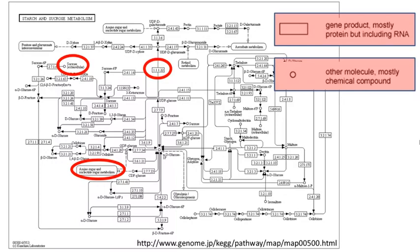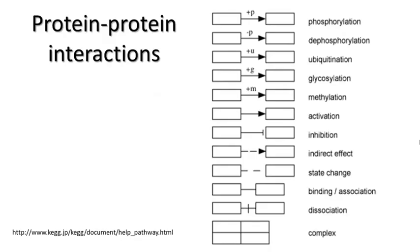As you can see, there are many interactions between the nodes. Let's look at the interactions more closely. There are several types of interactions in the pathway. The first type is protein-protein interactions, including phosphorylation and dephosphorylation, marked with a plus P or minus P on the arrow.